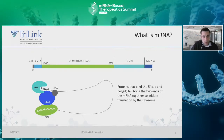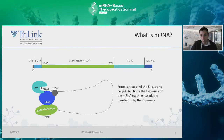Here you see the standard structure of a typical mRNA. This includes a 5' cap, a 5' UTR region, and the coding sequence for the target protein, a 3' UTR region, and a poly-A tail. Each part is integral for proper protein expression of your target gene.